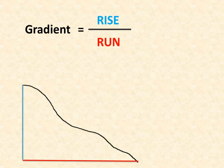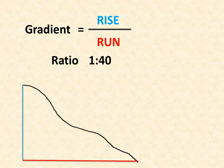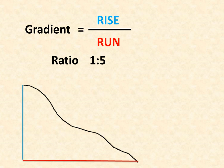We talk about gradient in terms of a ratio. So an answer for gradient might be something like 1 to 40, which means for every 1 metre of rise we have 40 metres of run. Or it could be 1 to 5, meaning every 1 metre of rise is 5 metres of run.